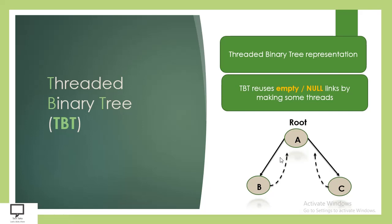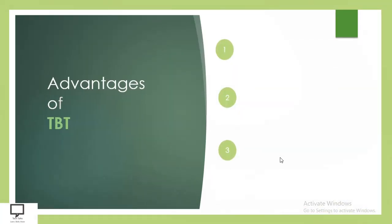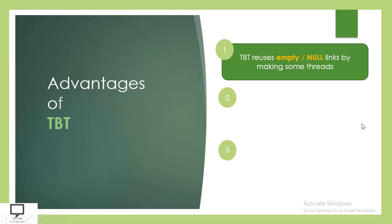This is only a representation; the full concept of the threaded binary tree will be explained very soon in this video series. Now let's see the advantages of the threaded binary tree. The first advantage is that it reutilizes the empty or null links by making some threads — threads reuse the null pointer or empty space. Even though memory is allocated for the whole node, the memory wastage from null fields is reused by the threads.